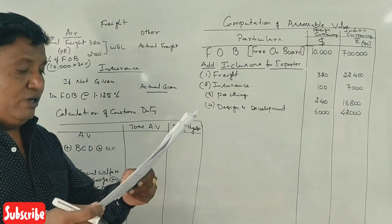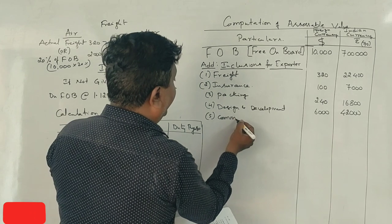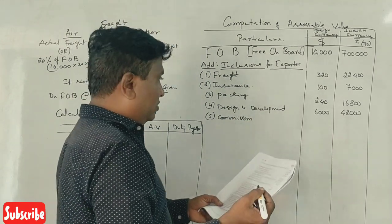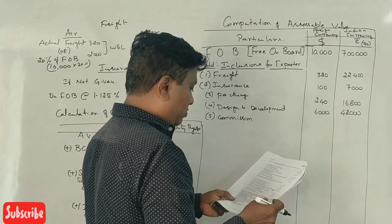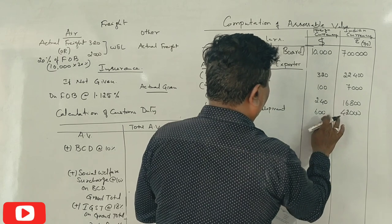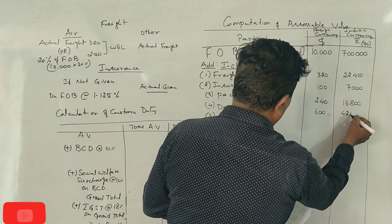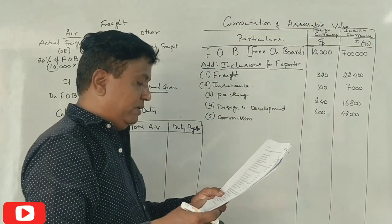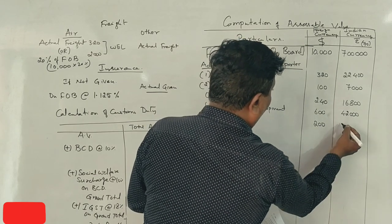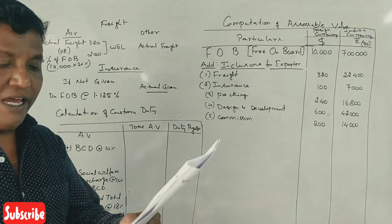Next, commission paid to a broker. The broker commission is $200, giving ₹14,000. The total assessable components are now being summed up. So design and development: ₹42,000. Broker commission: ₹14,000. Correct?